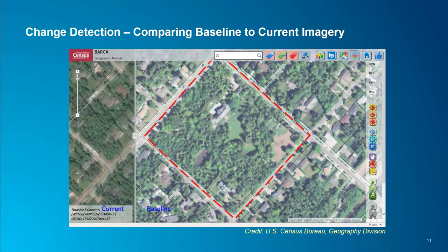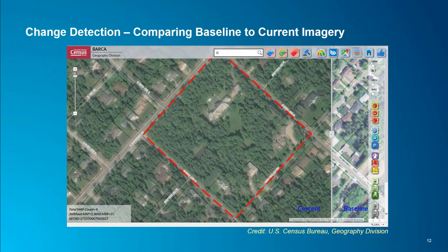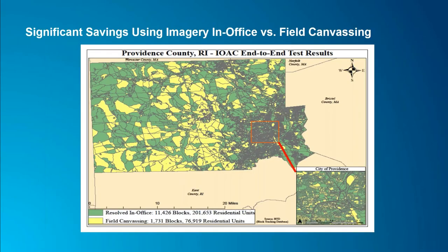Another example of change detection comes from the United States Census Bureau. They're doing change detection by comparing baseline imagery from the 2010 Census to current imagery to identify areas of change. The Census Bureau staff is identifying these areas and marking them so they can send their field staff out to canvas new buildings. They're also eliminating large areas that do not have change, saving significant amounts of time and money. This example in Providence County, Rhode Island illustrates the vast amount of areas in green resolved as not having changes, significantly narrowing down the areas with change shown in yellow.